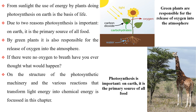The use of energy by plants doing photosynthesis on Earth is the basis of life. Photosynthesis is important for two reasons. On Earth, it is the primary source of all food. By green plants, it is also responsible for the release of oxygen into the atmosphere. If there were no oxygen to breathe, have you ever thought what would happen? This chapter focuses on the structure of the photosynthetic machinery and the various reactions that transform light energy into chemical energy.